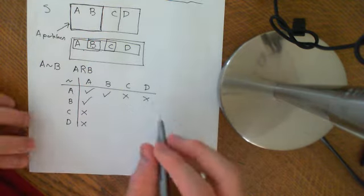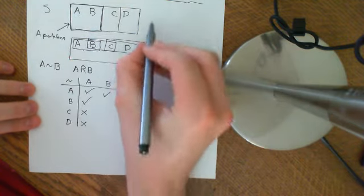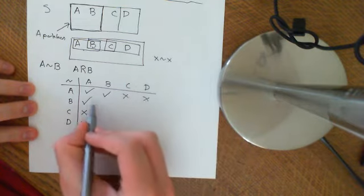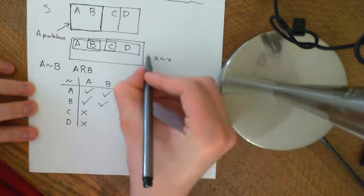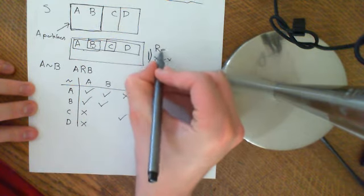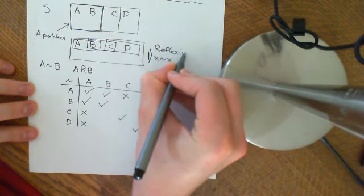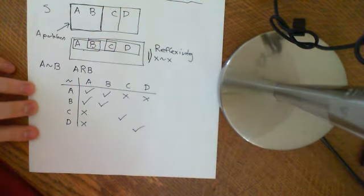What properties does it need to have? Firstly, if A is in a set, then A does need to be related to A. So we want X to be related to X. That tells us that all the diagonal elements of this table need to be ticks. That's our first axiom, and it's called reflexivity. X is reflexively related to itself.